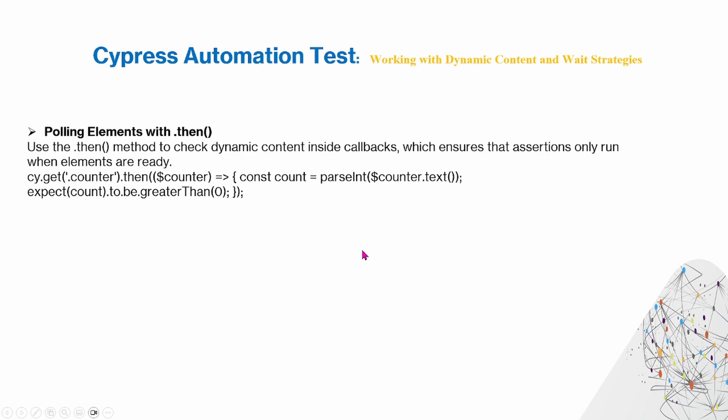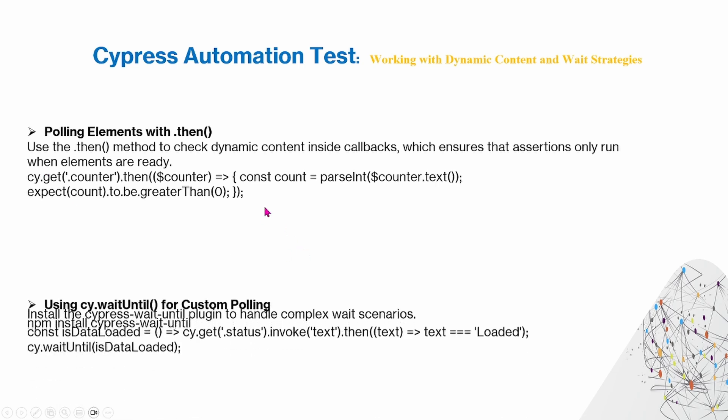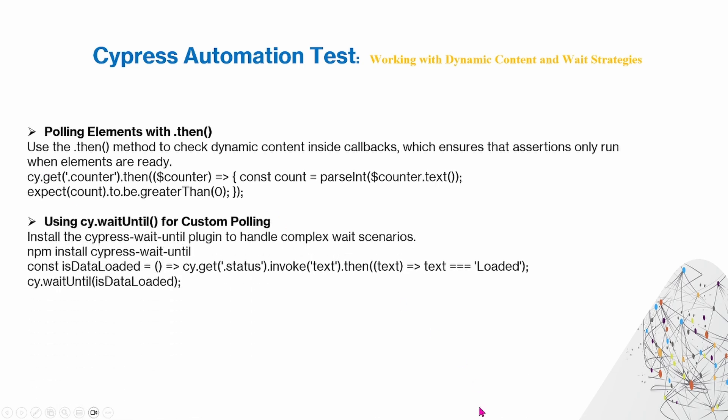You can also poll elements with the .then command — use the .then method to check dynamic content inside callbacks, which ensures that assertions only run when elements are ready. You can also install the cypress-wait-until plugin to handle complex wait scenarios with custom polling.